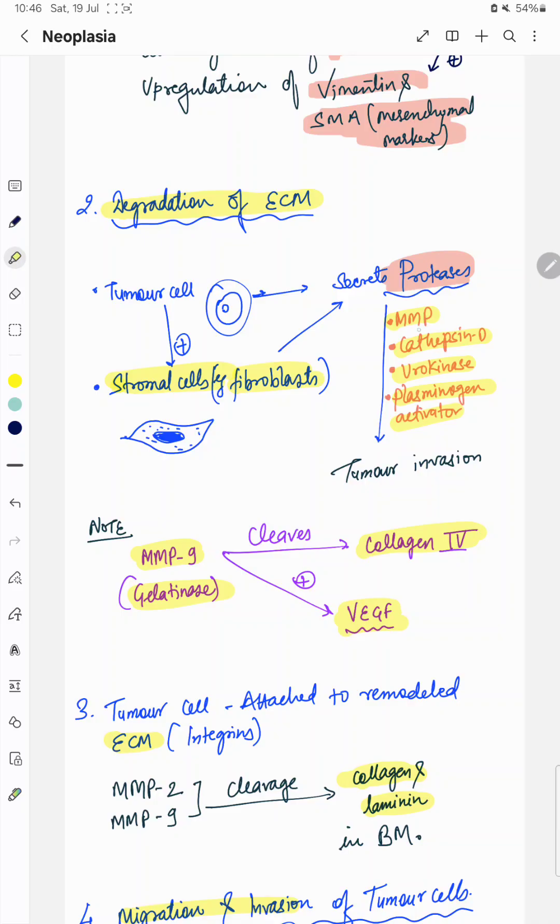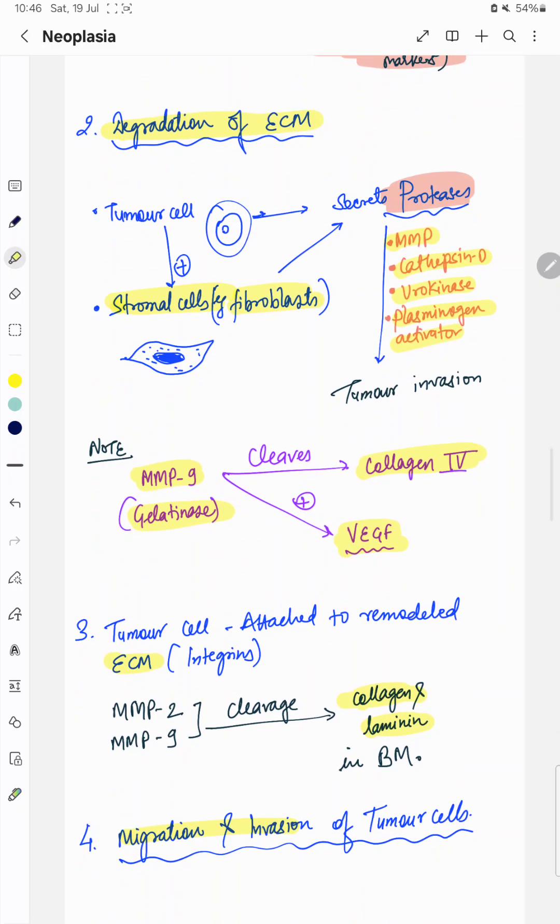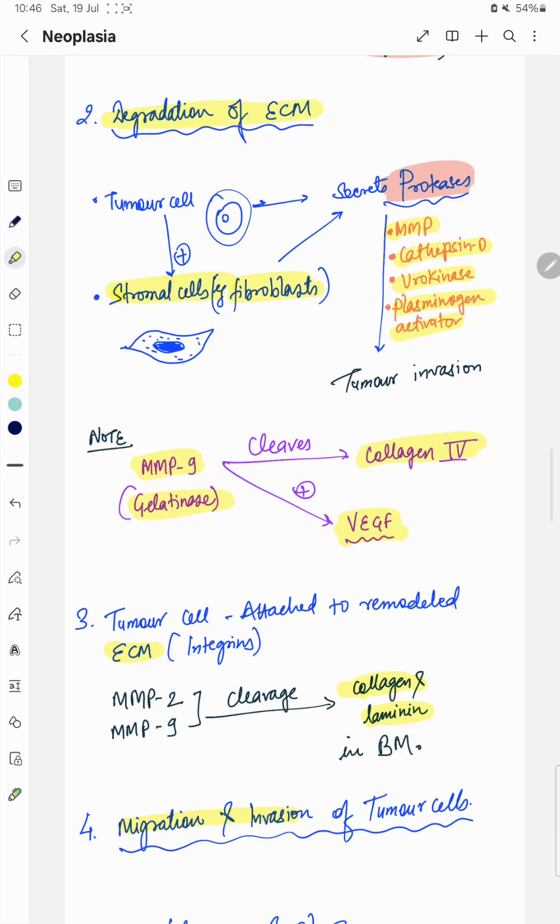Proteases namely MMP, which stands for matrix metalloproteinase, cathepsin-D, urokinase, plasminogen activator. These proteases will result in the degradation of extracellular matrix protein.